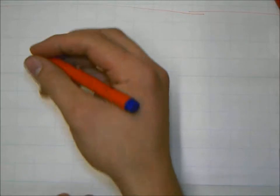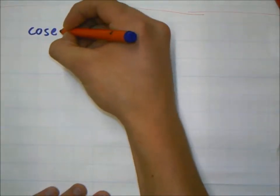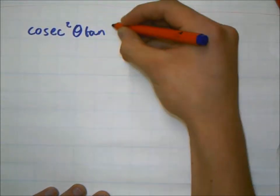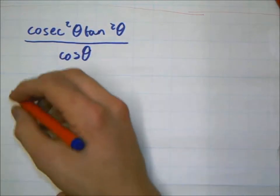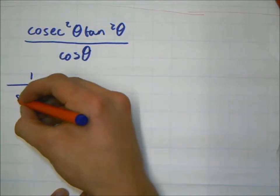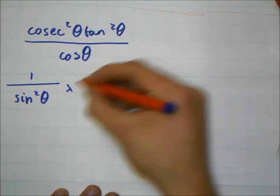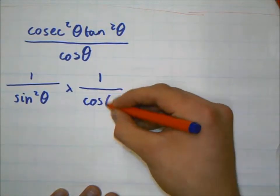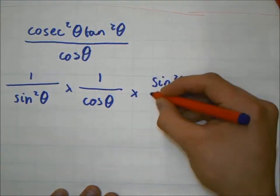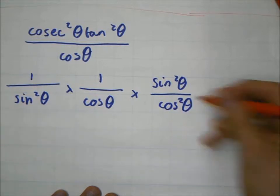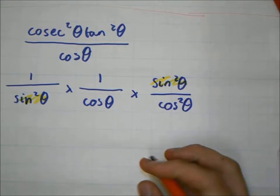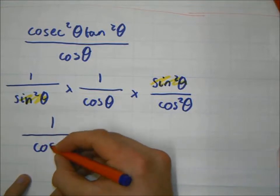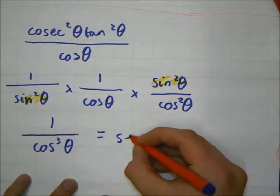So let's see, hello, I'm going to do question one H of exercise 16. What I did was I separated it into one over sine squared theta times one over cos theta times sine squared theta, and the two sine squared thetas canceled out, which equals sec cubed theta.